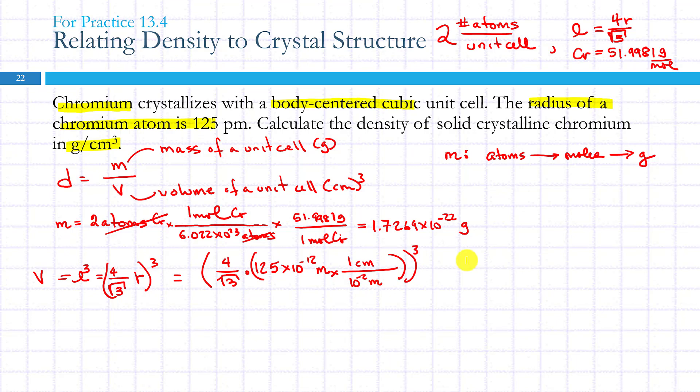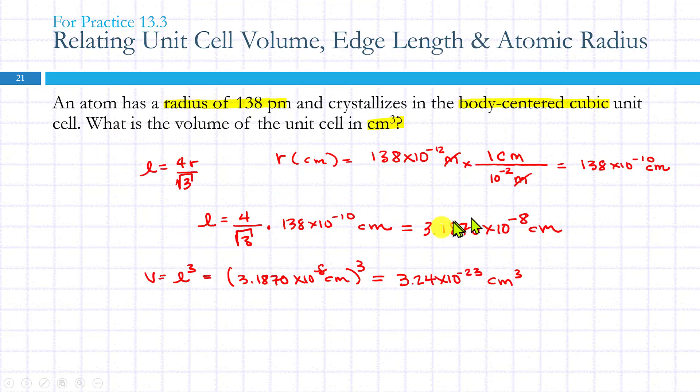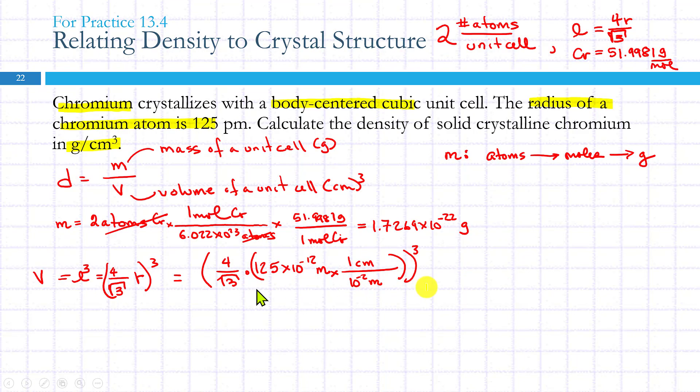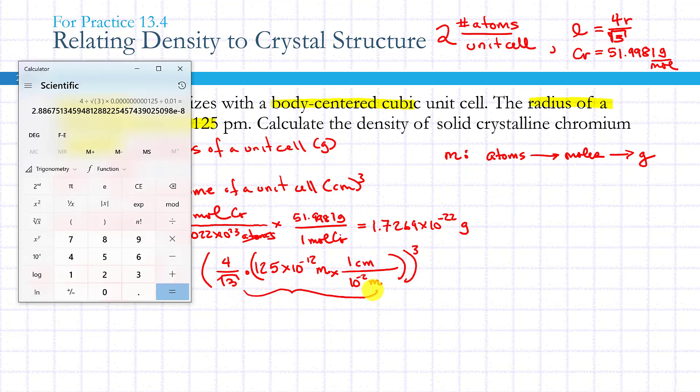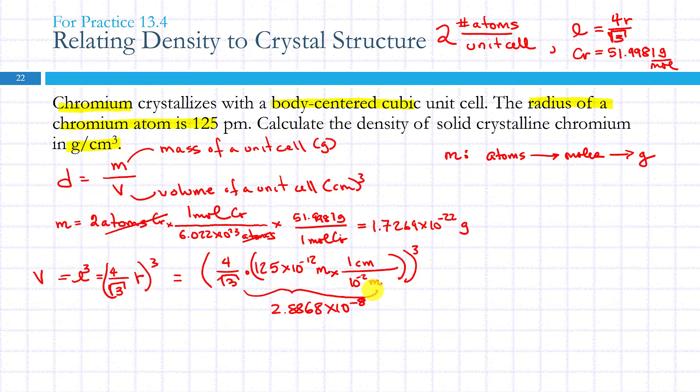Or you could do it exactly like we did it here, where we calculate each bit out separately and then end up cubing the numerical result. Either way would give you the same answer, just depends on how comfortable you are with the calculation. This part is 2.8868 times 10 to the minus 8. You can see the calculation on the screen there.